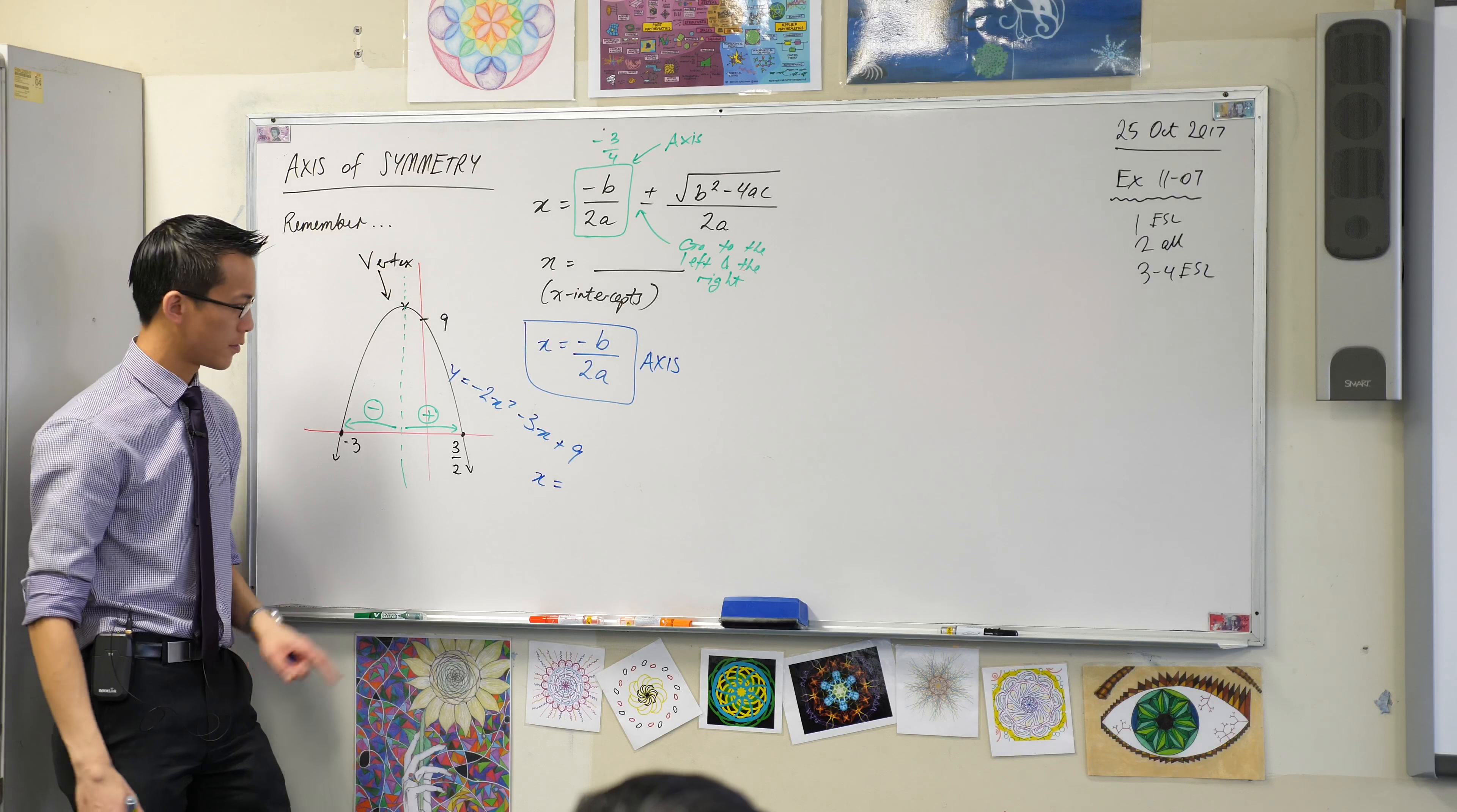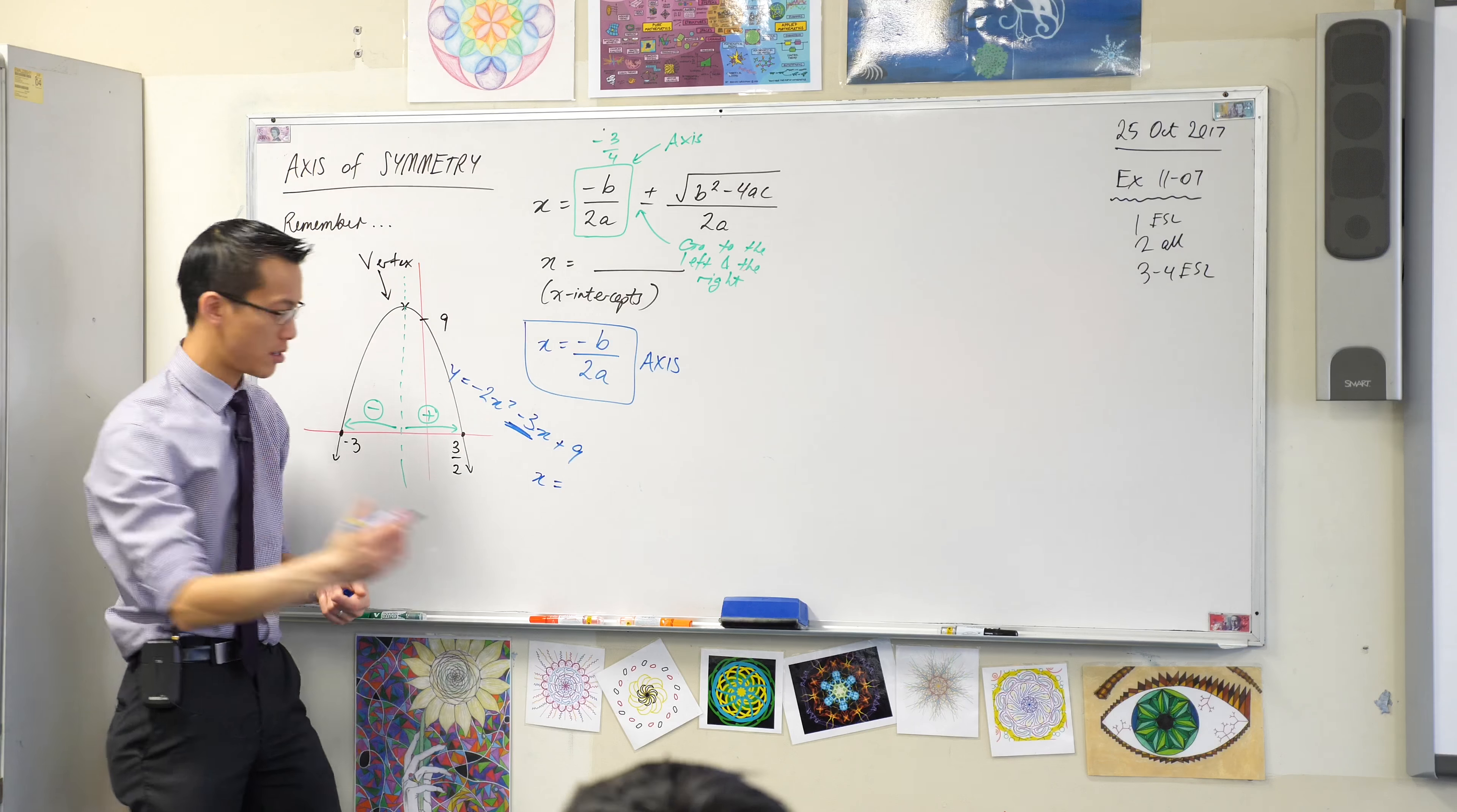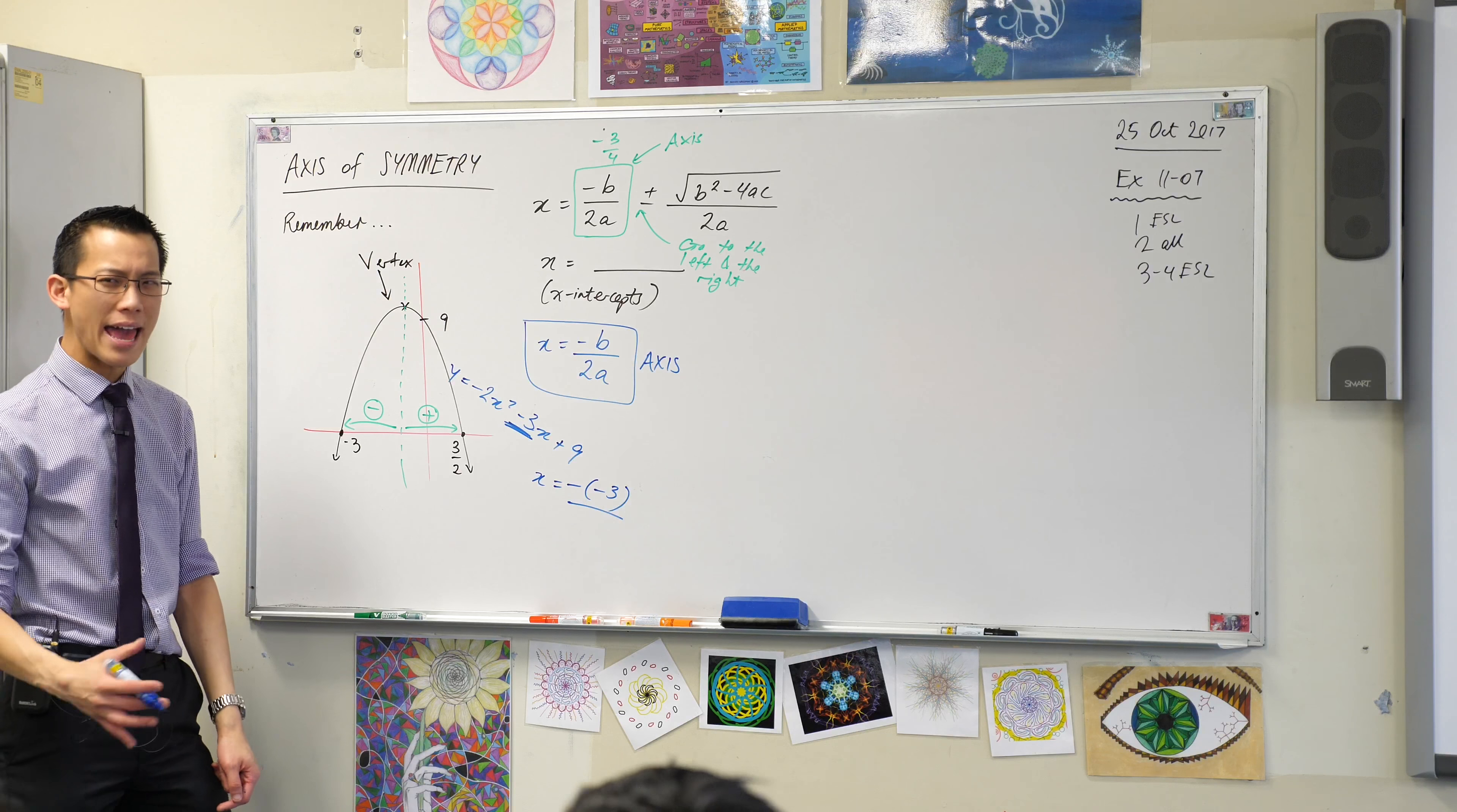Really? It's the whole number. It's minus three. So, minus minus three. That's minus b. All on 2a. What's a? It's the whole number, which is minus two.